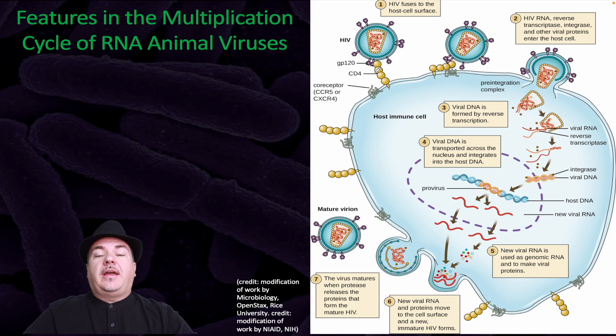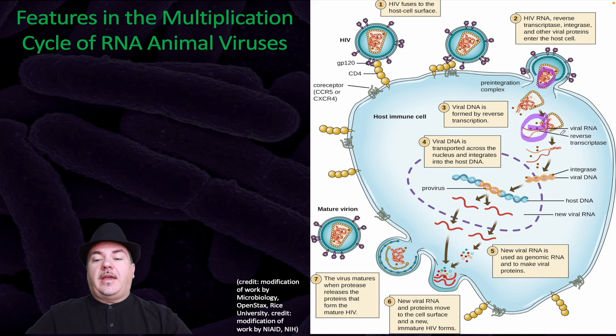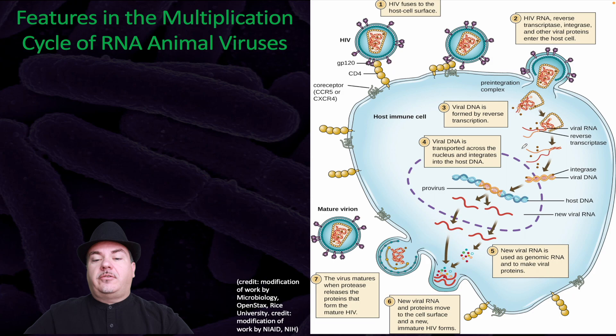We begin with adsorption, where the spike proteins on the virus recognize the structure on the surface of the animal cell. With HIV, the membrane of the virus fuses with the plasma membrane of the cell, so the contents inside can be brought into the cell. HIV is an RNA virus and a retrovirus, meaning its genetic material is in the form of RNA. Viral RNA and reverse transcriptase are released into the animal cell, and reverse transcriptase makes DNA from the RNA. The viral DNA is then transported into the nucleus and integrates into the host genome.